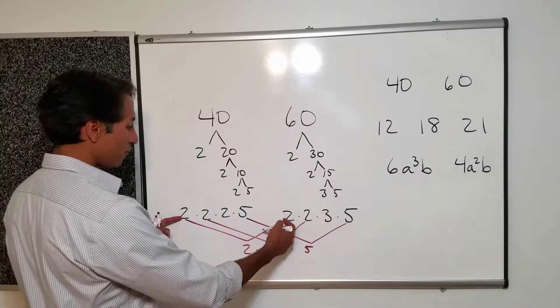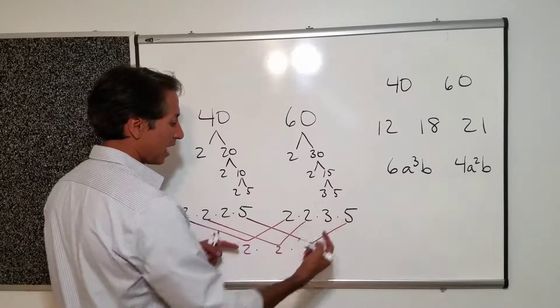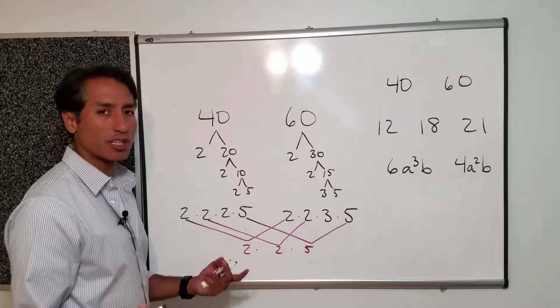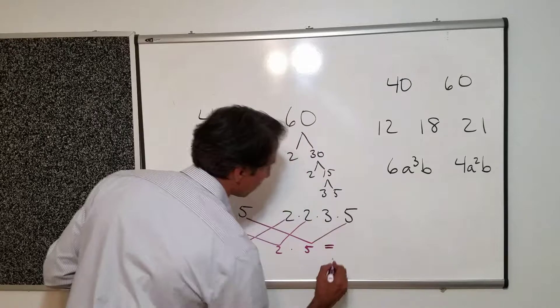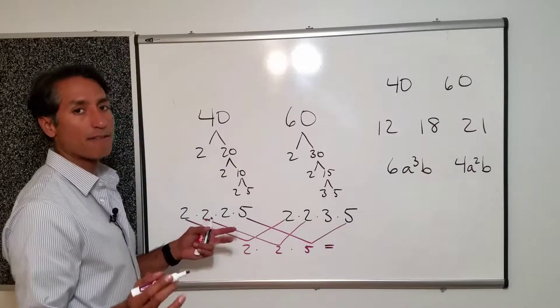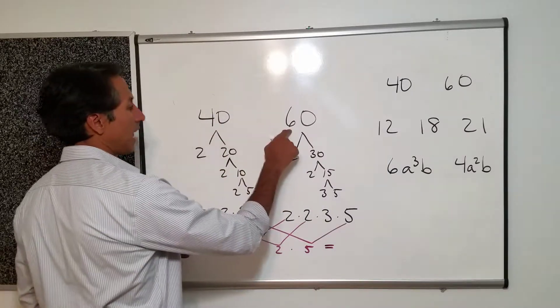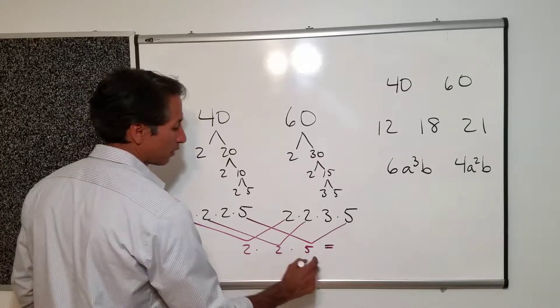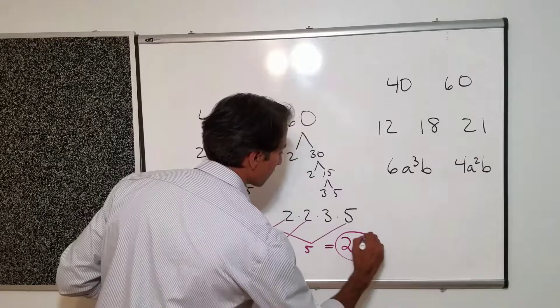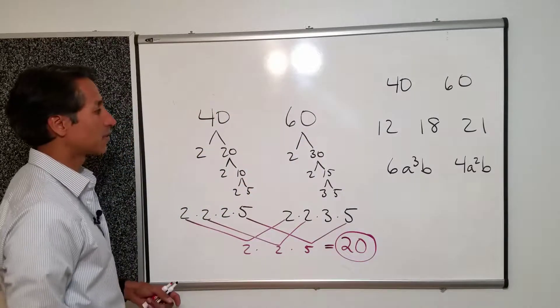So by pulling out all of the ones where you have one on each side what you're doing is you are creating factors that when multiplied will give you the greatest common factor between this guy and this guy. 2 times 2 is 4. 4 times 5 is 20. And so that would be your answer.